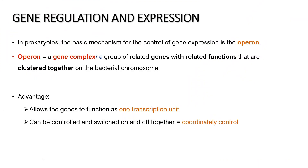In eukaryotes, the basic mechanism for control of gene expression is the operon. Operon is a gene complex or a group of related genes with related functions that are clustered together on the bacterial chromosome. The advantage of having related genes with related functions clustered together is that it allows the genes to function as one transcriptional unit, and allows this transcriptional unit to be controlled and switched on and off together — coordinately controlled.